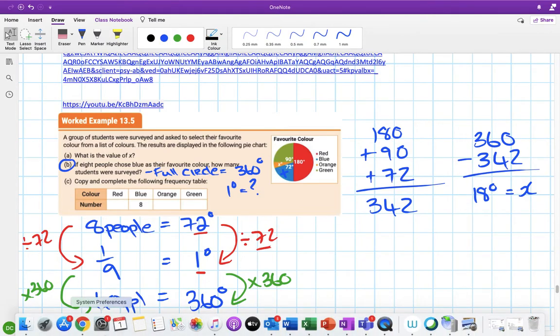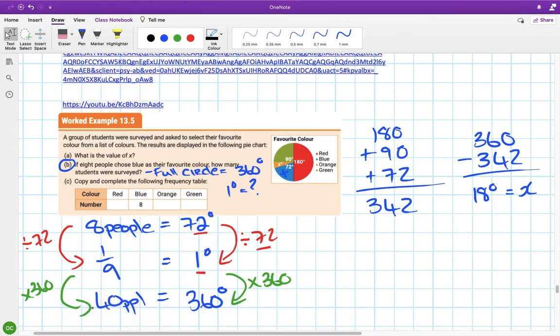The question was how many students were surveyed, which means I need to know how many people correspond to a full circle - the 360 degrees I'm trying to figure out. To be able to figure that out, I need to get what one degree is. That's why it was the degree side that needed to go to one, and not the people side.